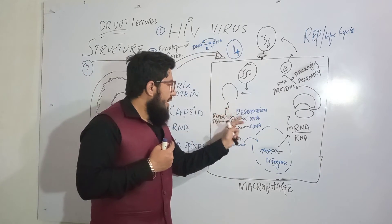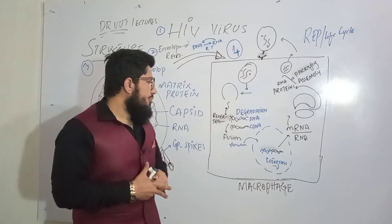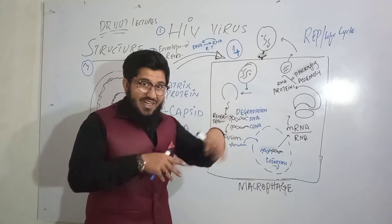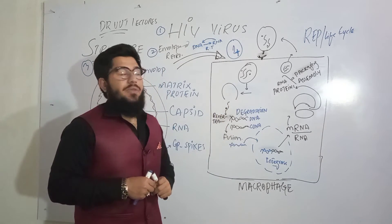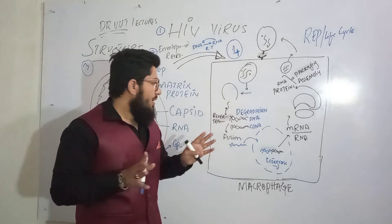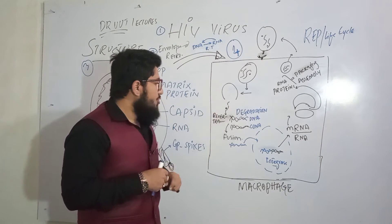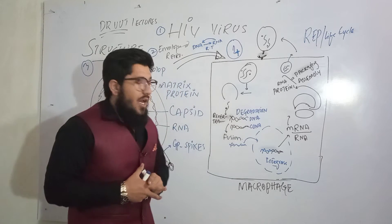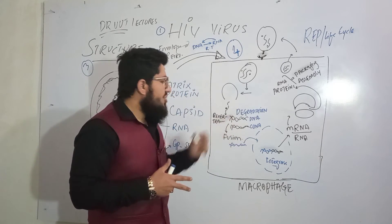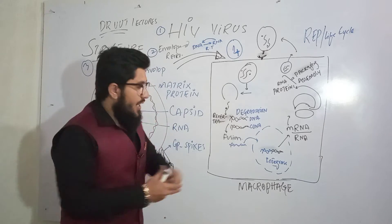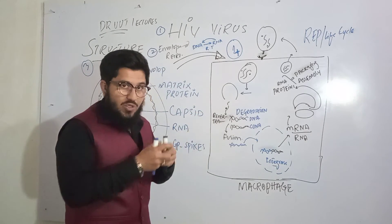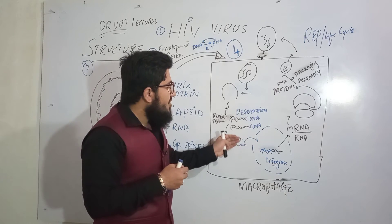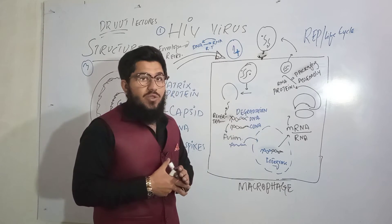A DNA will be synthesized. After that, the retrovirus will degrade — it will do the degradation of this RNA. Now this RNA is no longer available. The retrovirus will then interact with this DNA and synthesize a second DNA named complementary DNA. These two DNA strands will fuse together and start moving into the nucleus.